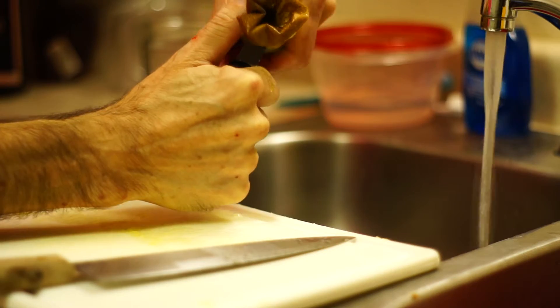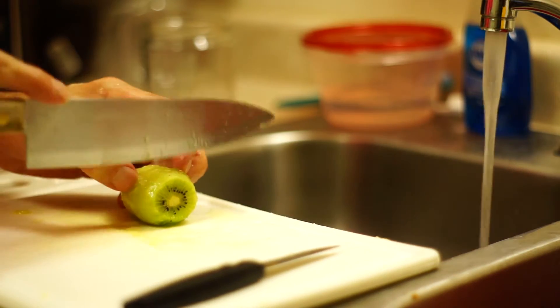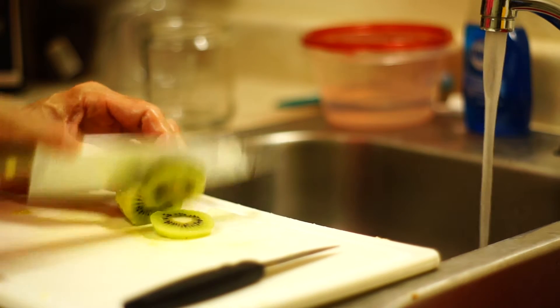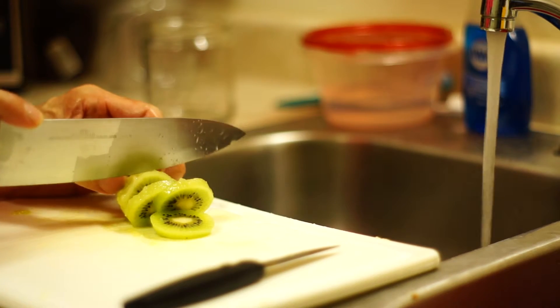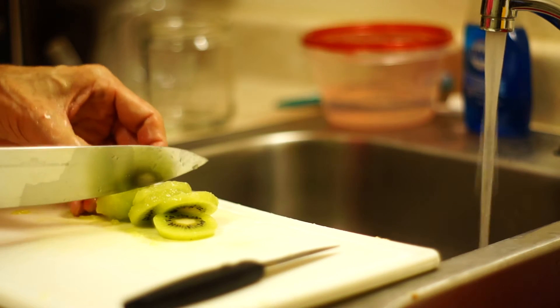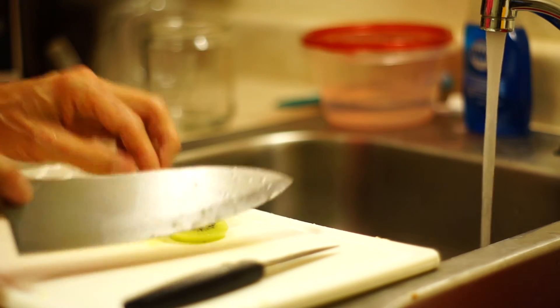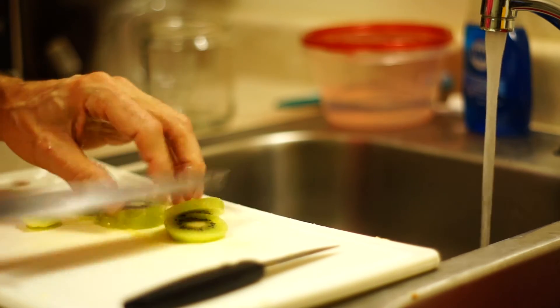You take about a quarter of an inch off the stem end. And then you slice. Still a little bit frozen, so it slices very nicely. And a couple more here. And there is your Kiwi.